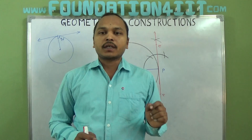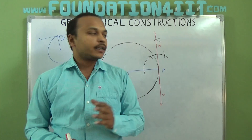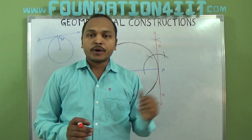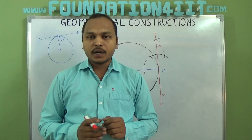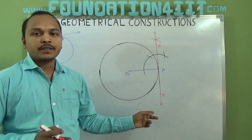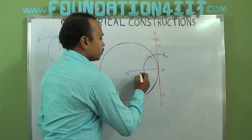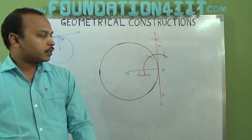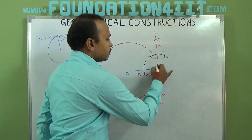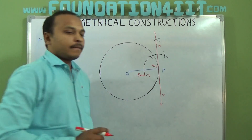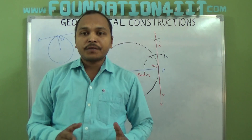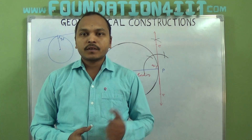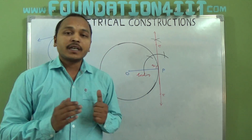In summary: at any point on the circle, from that point to the center draw the line segment first. Then at that point draw a perpendicular line at 90 degrees. The radius and the tangent are perpendicular, giving 90 degrees. By using the rule of tangent only, we constructed this. This is how you can construct a tangent at any point on the circle when the center is known.